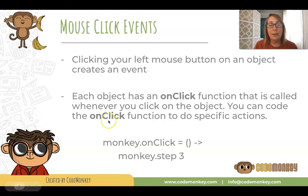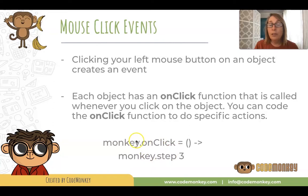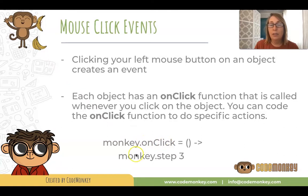Here's an example of an onclick function for the object monkey. Because you have this function in your code, whenever you click on the monkey it would make the monkey step three. When you write your onclick functions, just make sure you have the object name dot onclick, and then you can specify the actions you want to happen whenever you click on that object.